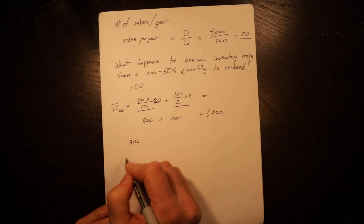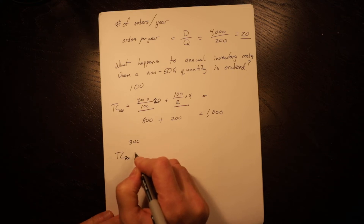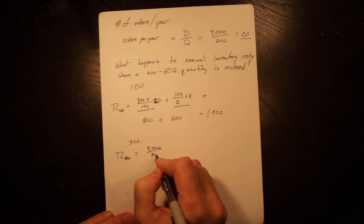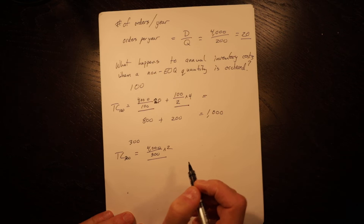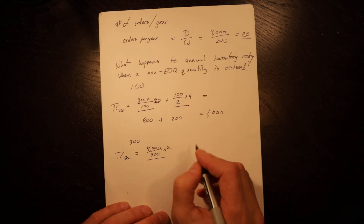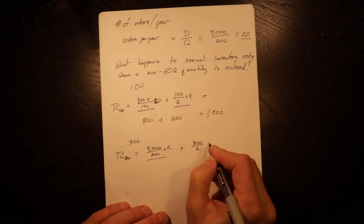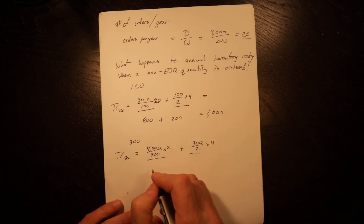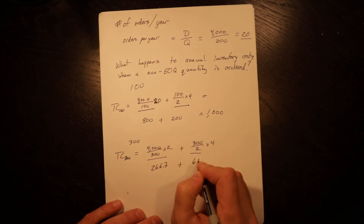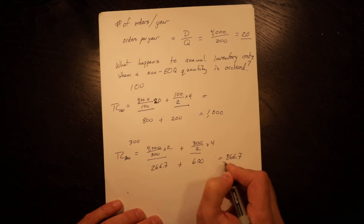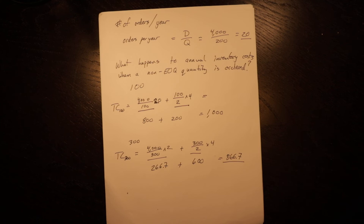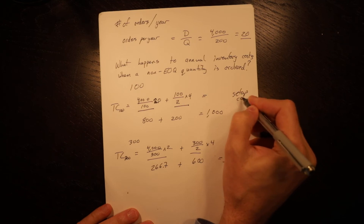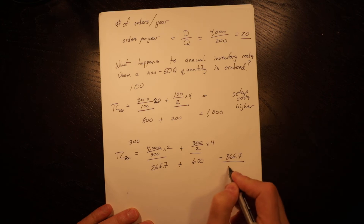Now looking at Q = 300: total cost equals 4,000 divided by 300 times 20, plus 300 divided by 2 times 4. Setup costs go down because we order less frequently, but average inventory goes up. This equals 266.7 plus 600, equaling $866.70 — again higher than the $800 EOQ total cost. So costs rise on either side: below the EOQ, setup costs are higher; above it, holding costs are higher.